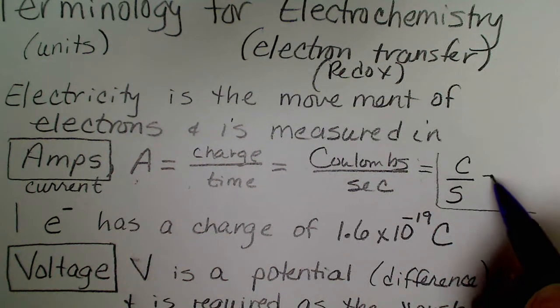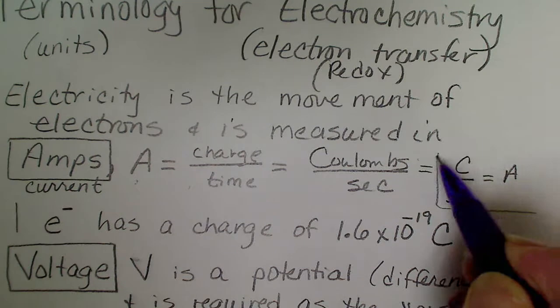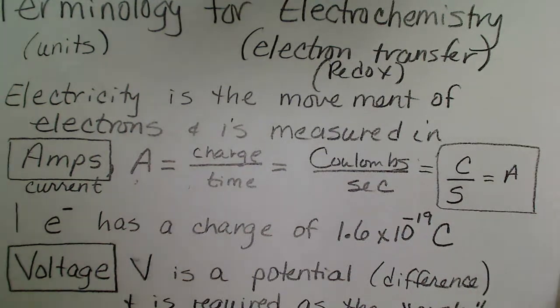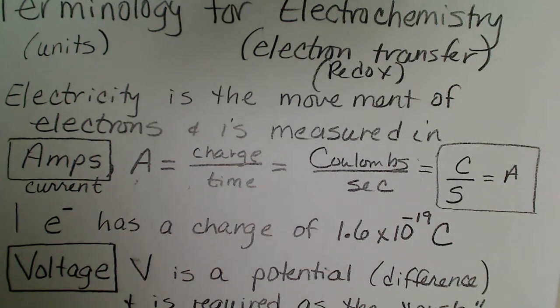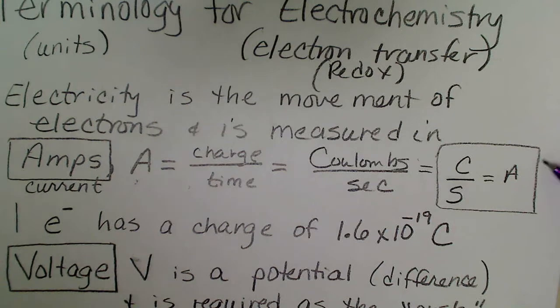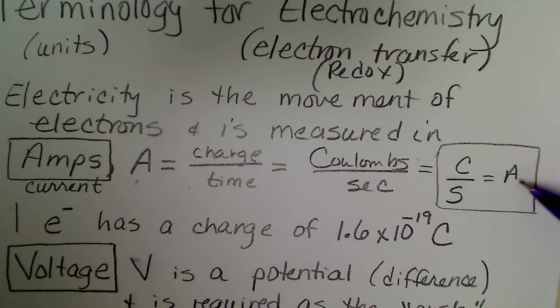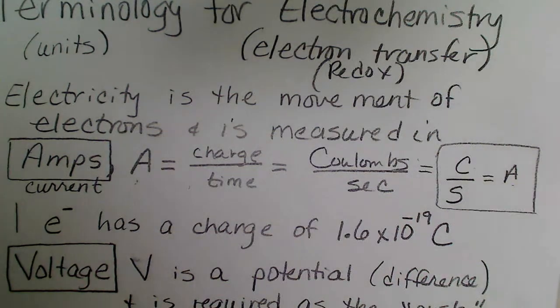The charge unit is a Coulomb and our time unit is going to be seconds, so a Coulomb per second is the same thing as the unit A for amps. We'll see that later on when we do calculations for plating a metal. It will be helpful to know that the symbol A (amp) stands for Coulomb per second.